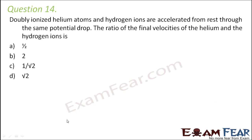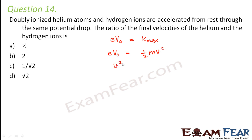Question number 14: Doubly ionized helium atoms and hydrogen ions are accelerated from rest through the same potential drop. The ratio of the final velocities of the helium and the hydrogen ions is to be found. We know that eV₀ equals K-max, which can be written as eV₀ equals half mv squared. So v squared equals 2eV₀ divided by m — that's how final velocity and potential drop are related.